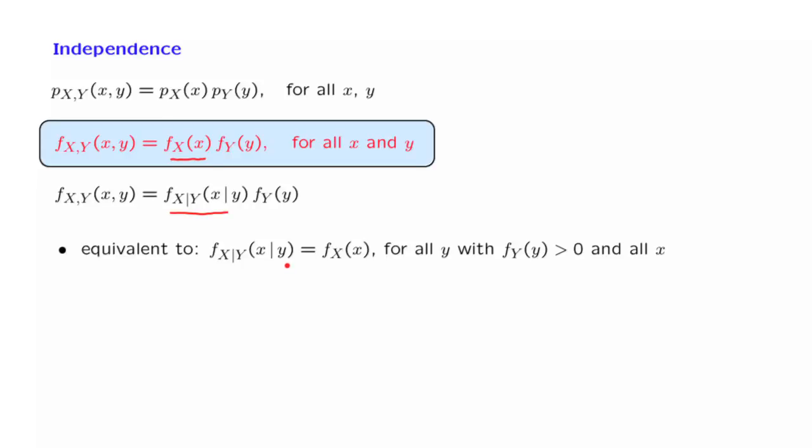Now, what does this really mean? The conditional PDF, as we have discussed in terms of pictures, is a slice of the joint PDF. Therefore, independence is the same as requiring that all of the slices of the joint have the same shape, and it is the shape of the marginal PDF.